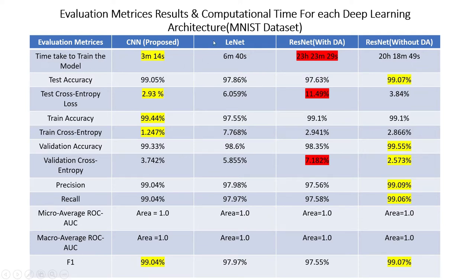My proposed GNet architecture will take three minutes and fourteen seconds. LeNet takes six minutes and forty seconds. So if I modify LeNet to suit my purpose, it will be two times faster than the original. With data augmentation it takes around twenty-three hours, versus twenty hours without data augmentation, because augmentation inputs more external data into the training step.